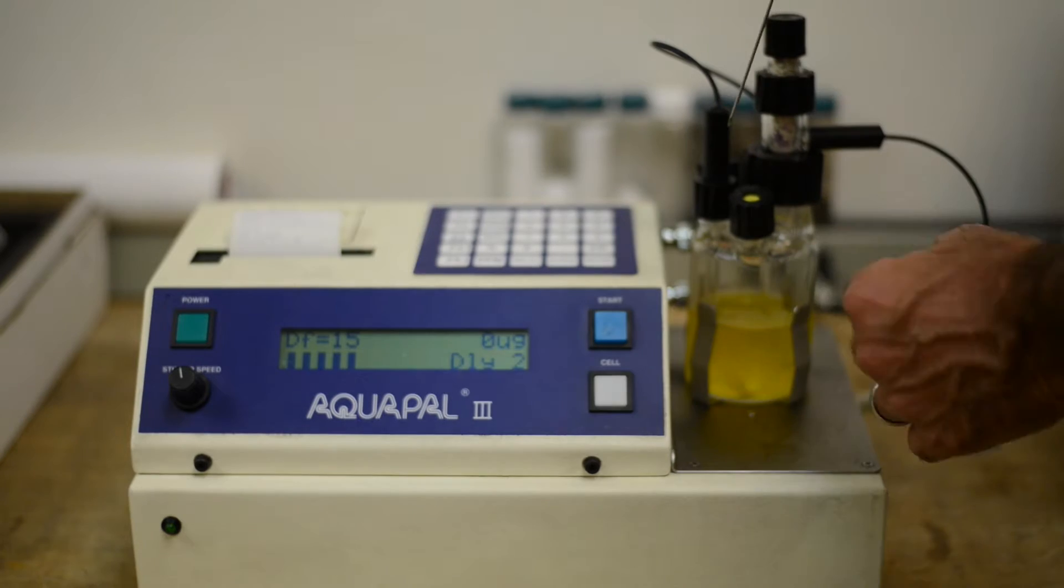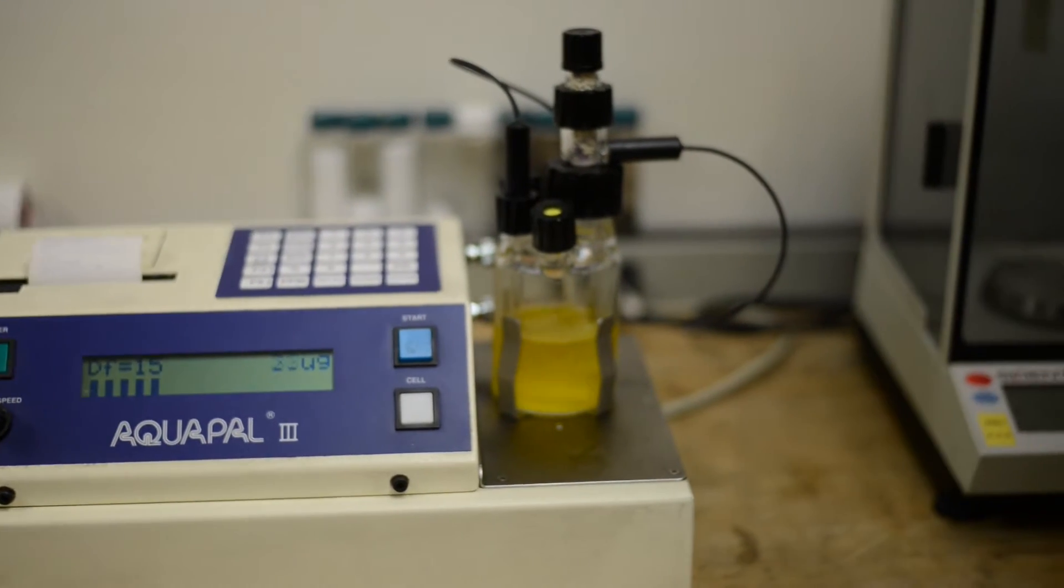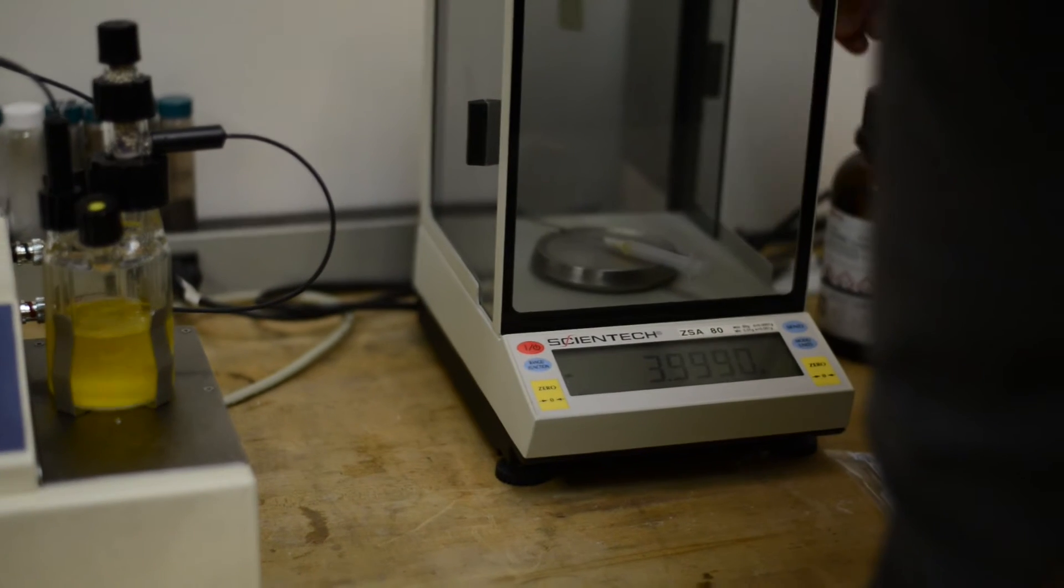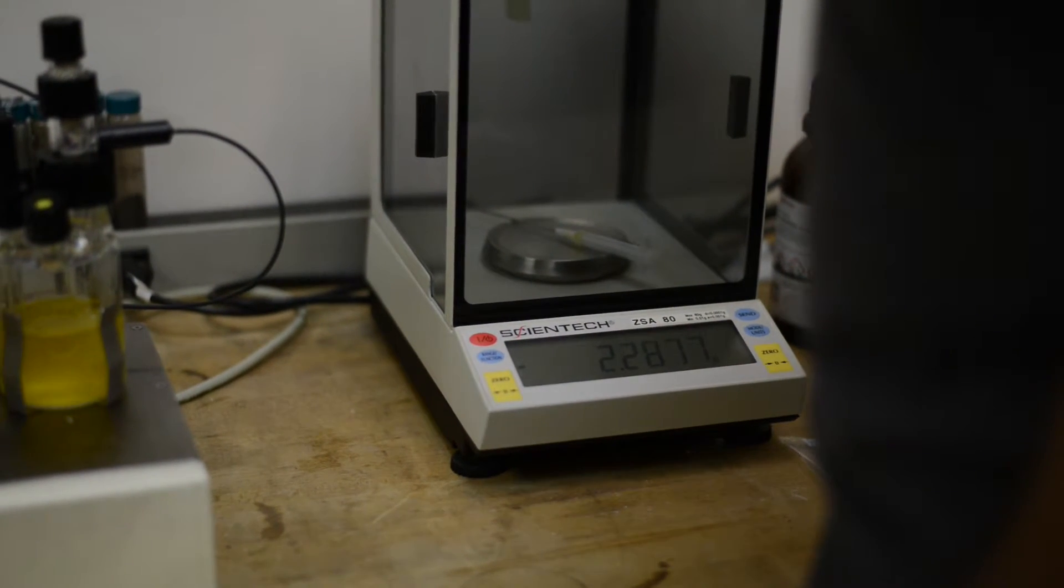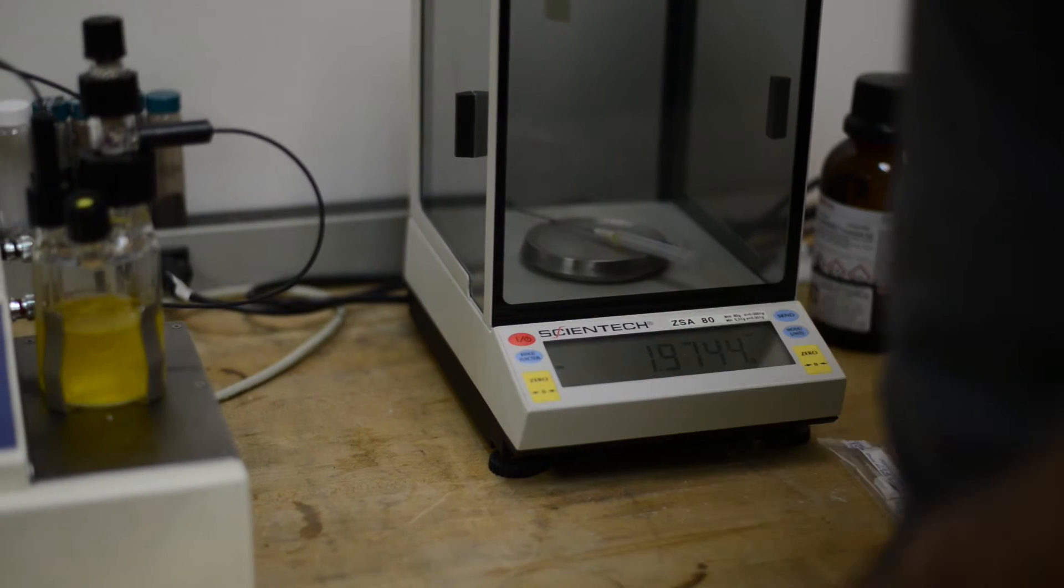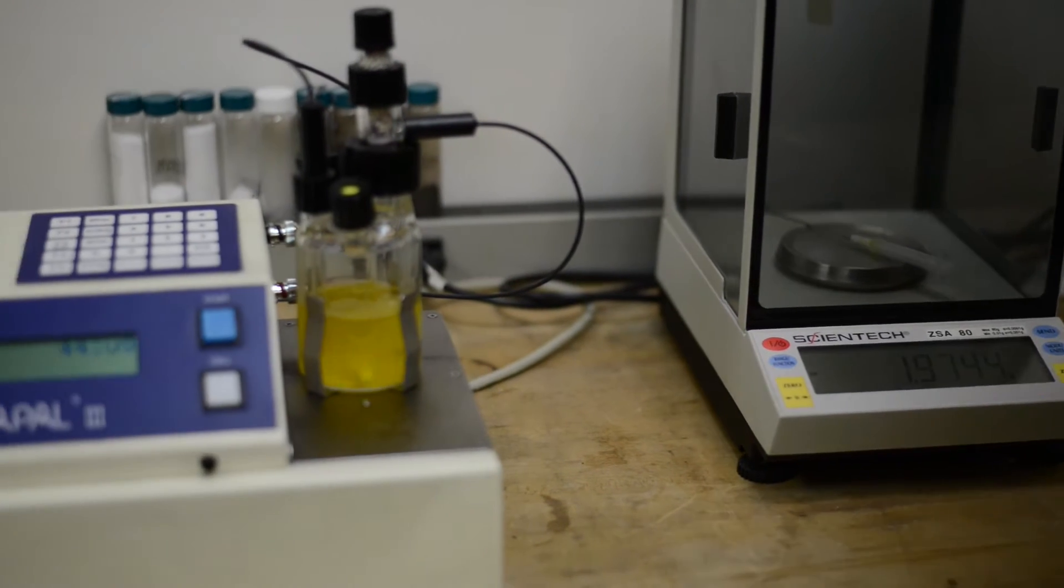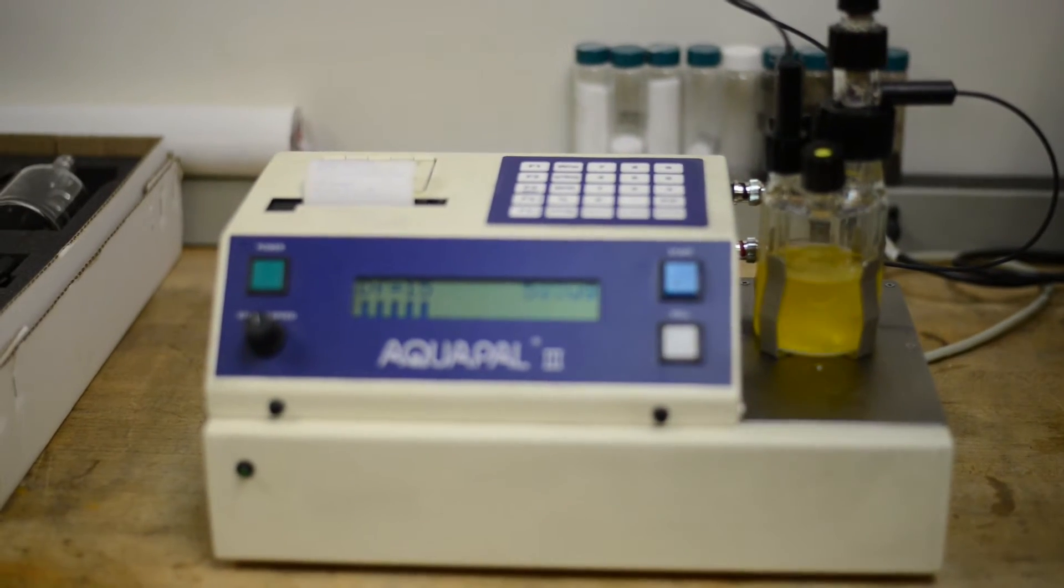Pull the syringe out. And re-weigh the syringe immediately. Because the weight that we're going to see here will be the weight of our sample. In this case, it's 1.9744 grams, which is close to 2 milliliters.